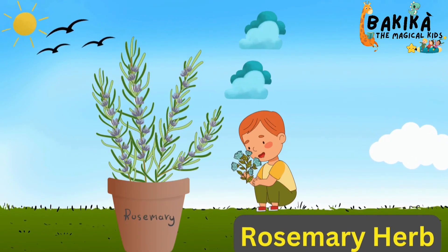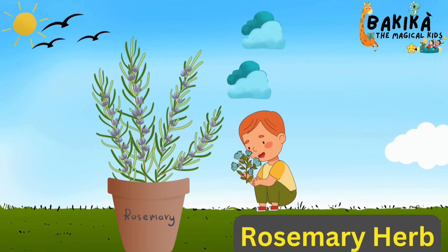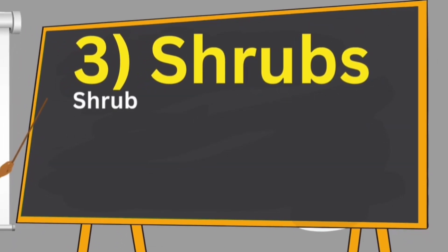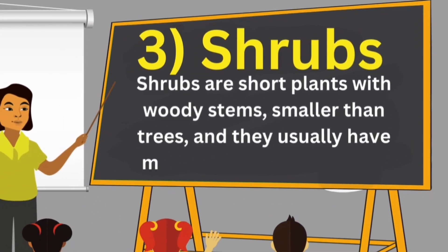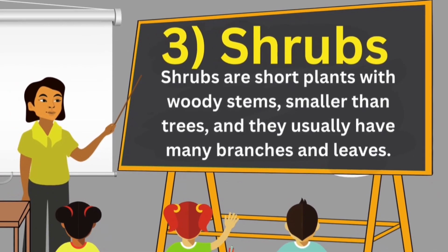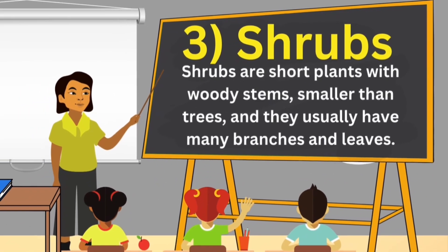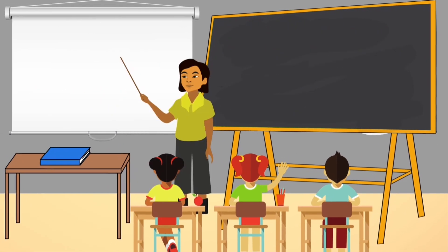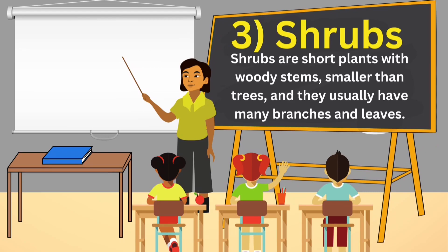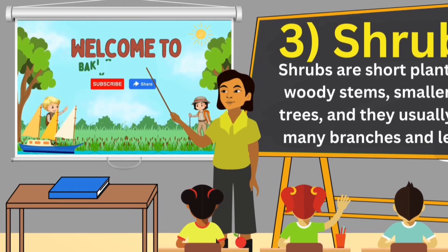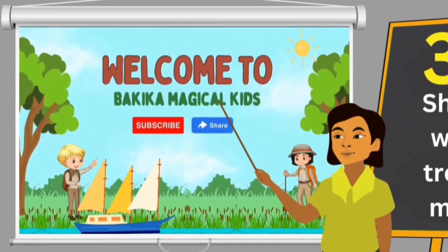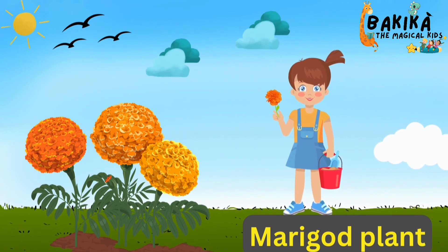This is a rosemary plant. Shrubs are short plants with woody stems, smaller than trees, and they usually have many branches and leaves. Examples of shrubs include the marigold plant.